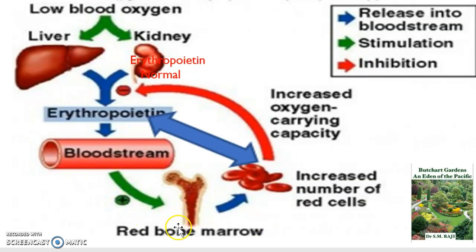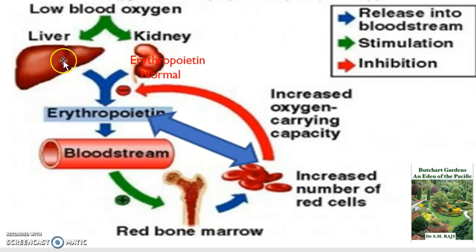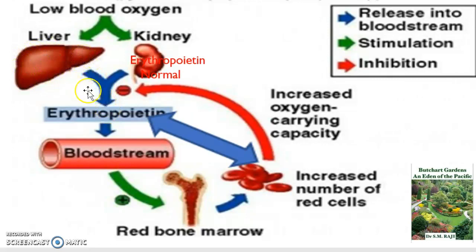In this diagram we show the red bone marrow, which is where red blood cells are produced. Once produced, they travel all over the body to transport oxygen. Two particular organs of interest in this condition are the kidney and the liver, with the kidney being more important.